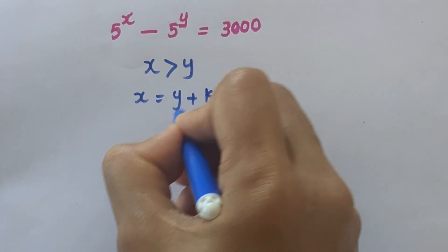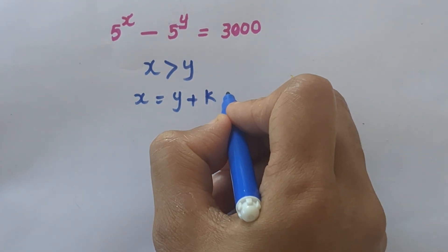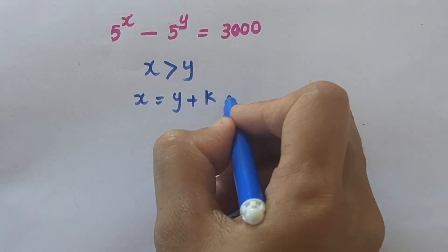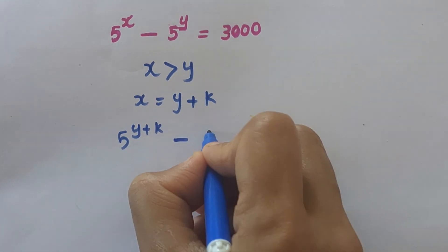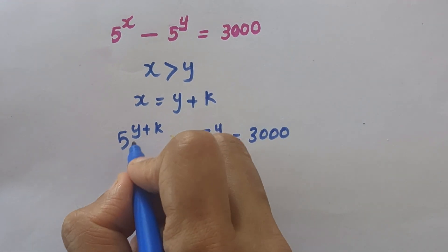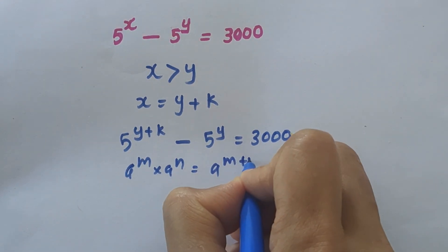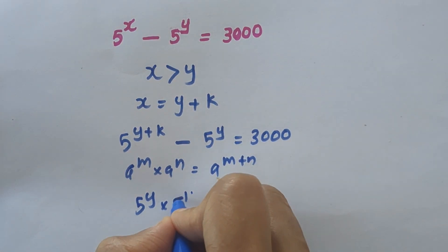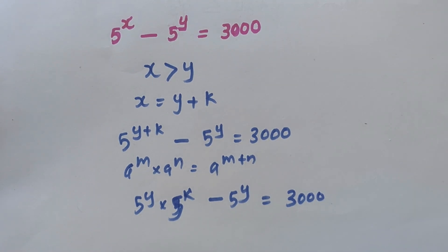When X is greater than Y, we can write X equal to Y plus some constant K. So we substitute X with Y plus K, giving us 5 raised to Y plus K minus 5 raised to Y equal to 3000. Using the exponent rule a^(M+N) = a^M × a^N, we can write this as 5 raised to Y into 5 raised to K minus 5 raised to Y equal to 3000.